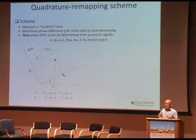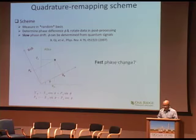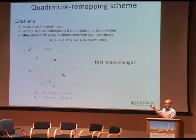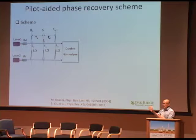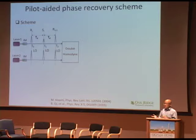This scheme has been applied in a CVQKD demonstration to compensate the slow phase drift due to fiber birefringence. But in the case of two independent lasers, the phase will change much faster, so we need a new scheme to recover the phase phi in real-time. One intuitive solution is to send a relatively strong classical reference pulse from Alice's laser to Bob. By measuring this reference pulse, Bob can determine the phase relation between the two lasers in real-time. This is the scheme we adopt here.